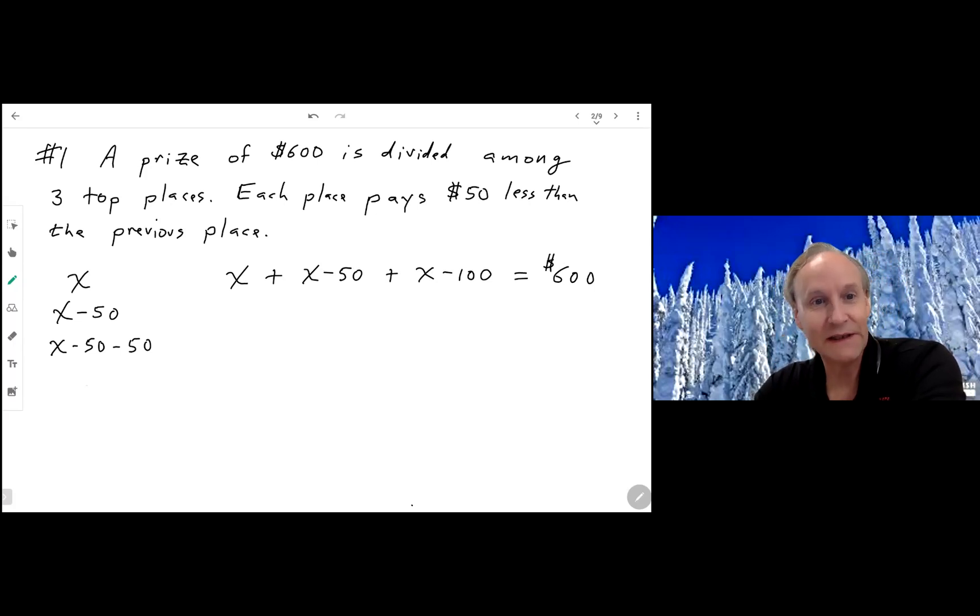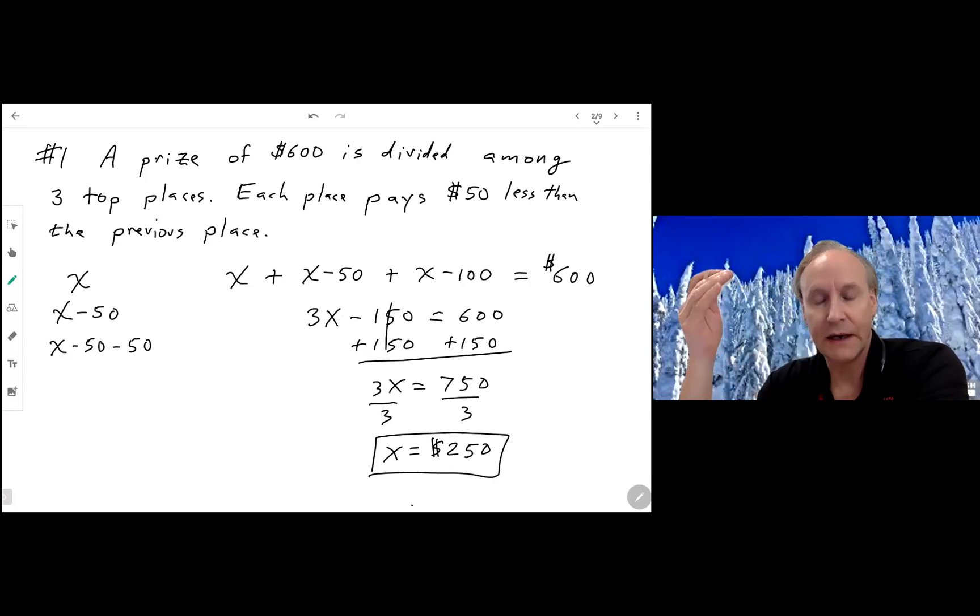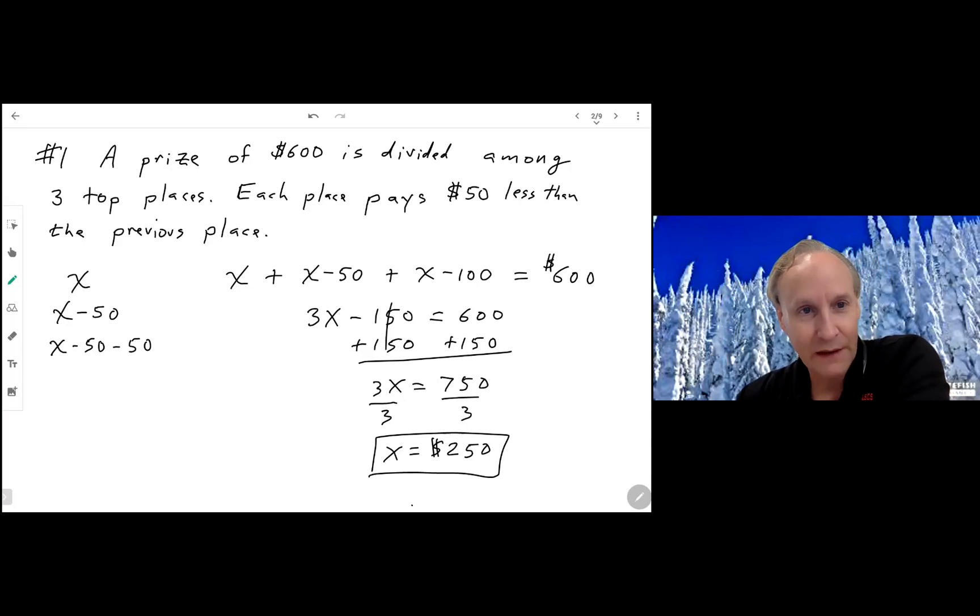What we want to do is solve for all three places. Find your X value, which is first place. Then write the places for first, second, and third. I want you to notice something. I didn't write a diagram this time, but I did do a formula. I substituted into my formula. First plus second plus third is $600. Then I simplify. So I have 3X minus 150 equals 600. We add 150 to both sides and get 3X equals 750. We divide by 3 and get X equals $250. That will allow you to find the three places.